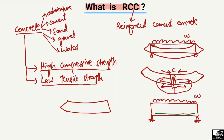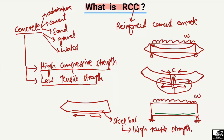The steel bar at the bottom is now subjected to tension. The advantage of the steel bar is that it has high tensile strength. At the top we have compression, and the concrete at the top has high compressive strength, so we don't need to provide any other material to enhance the compressive capacity of the beam.